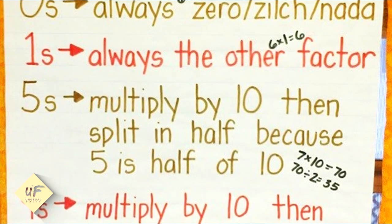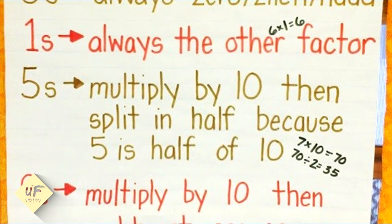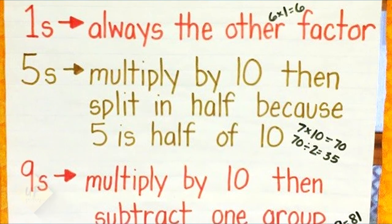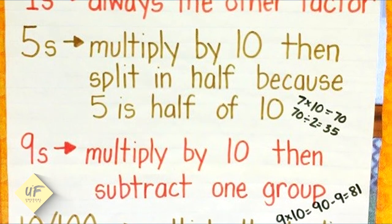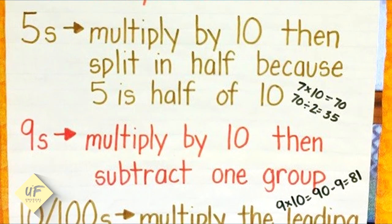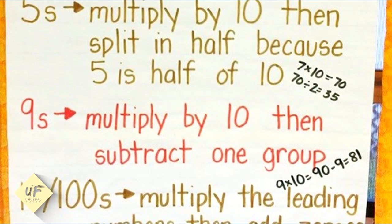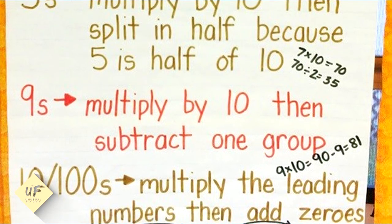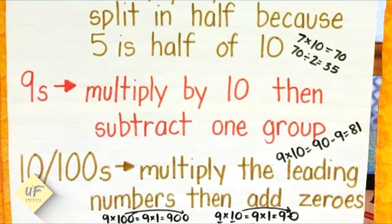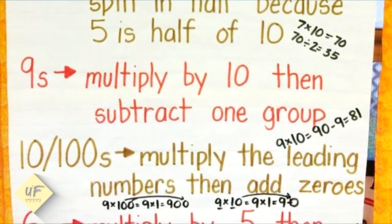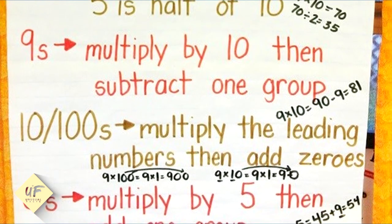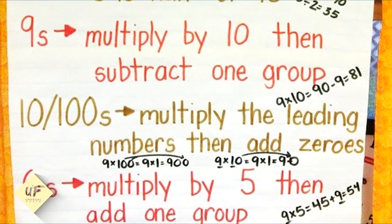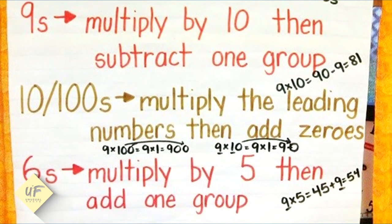0's always equal 0, so 6 times 0 is 0, zilch, nada. 1's always equal the other factor, so 6 times 1 of course is 6. 5's multiply by 10 then split in half, because 5 is half of 10. So 7 times 10 equals 70, and 70 divided by 2 or 70 cut in half is 35.